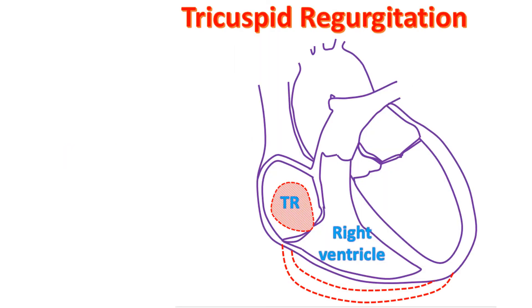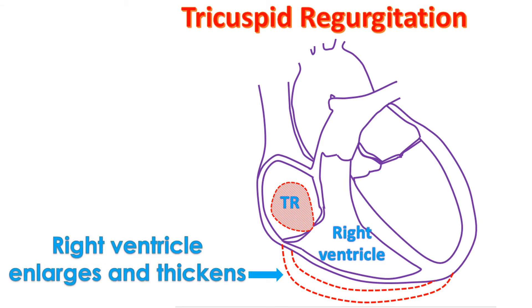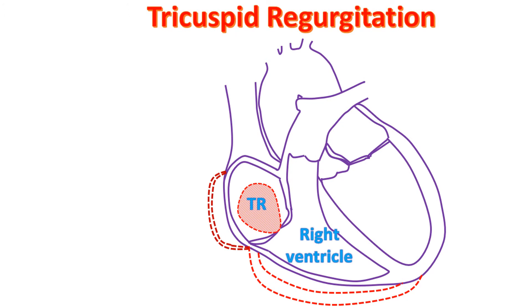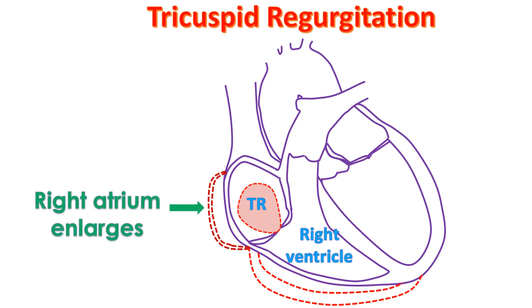Symptoms of tricuspid regurgitation are often overshadowed by the symptoms of the primary heart disease which causes the increase in pressure in the pulmonary artery. The right ventricle enlarges and thickens both due to the increase in pulmonary artery pressure as well as the extra workload produced by the leak. The extra load on the right atrium causes it to enlarge.